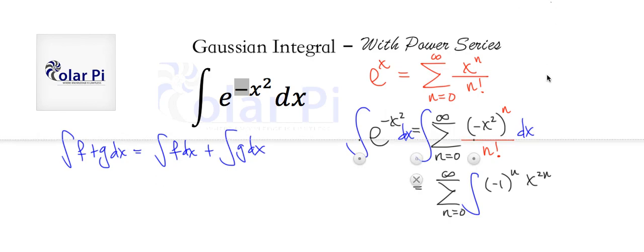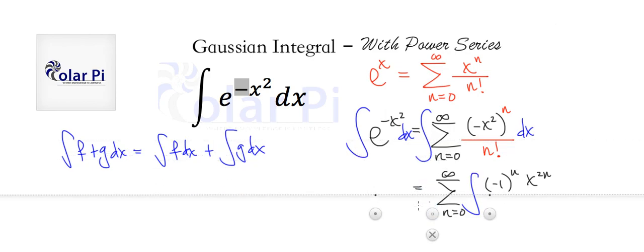Divided by n factorial, times dx. That dx is supposed to be in blue—my bad y'all. So dx right here.